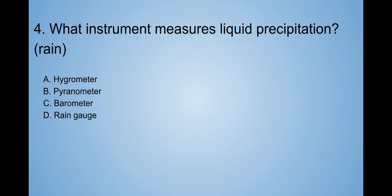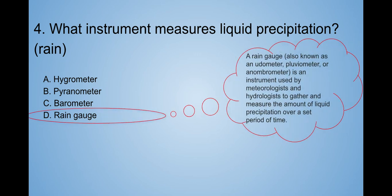Ready? It's D. Rain gauge. A rain gauge is an instrument used by meteorologists and hydrologists to gather and measure the amount of liquid precipitation over a set period of time.